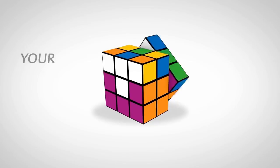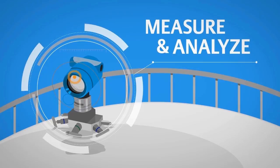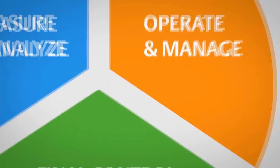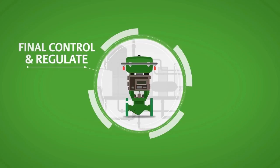To reflect your area of process automation, we have structured our business accordingly. Measure and analyze provides reliable, validated measurement of all your process parameters. You've measured your process, now you need to decide what to do. Operate and manage is the control systems that execute your logic. Final control and regulate: the valves and regulators that physically control your process. And solve and support is our people helping to specify, design, engineer, commission your systems and support you.